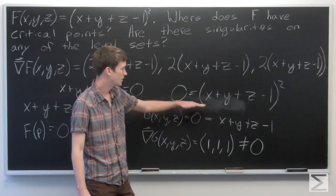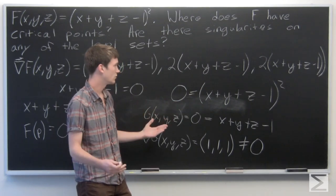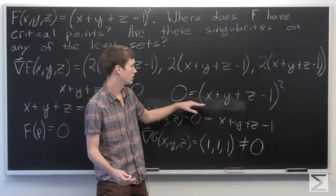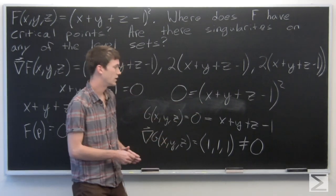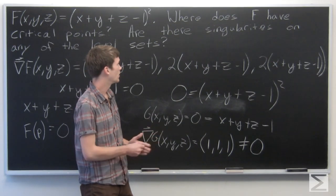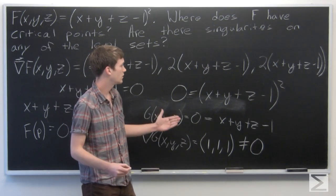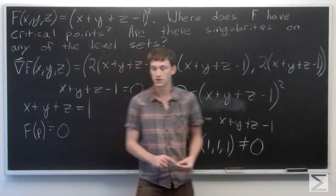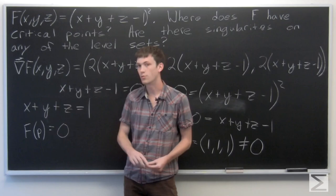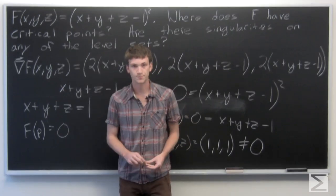Thus there is no singularity on f when f is equal to 0. So we know that there are no singularities, but there is a whole plane of critical points.